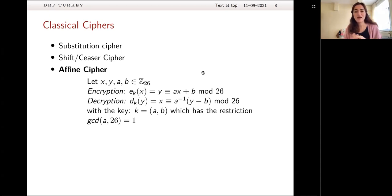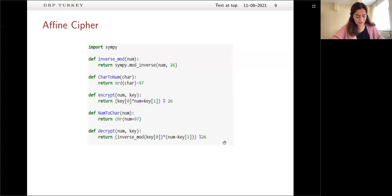So as you can guess, here A and B are the keys. And we have one restriction, which is the greatest common divisor of A and 26 must be equal to 1 in order to find the inverse of the element A here. So you may ask why are we working on Z26. It's just because of the English alphabet. English alphabet has 26 letters, and therefore we are working with Z26.